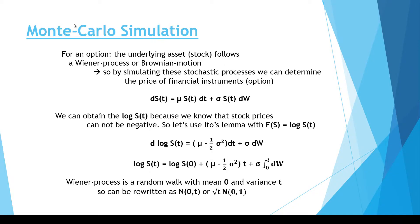In this lecture we are going to make a Monte Carlo simulation in order to calculate the option price. For an option, the underlying asset or the stock follows a Wiener process or Brownian motion. By simulating these stochastic processes we can determine the price of financial instruments such as options.